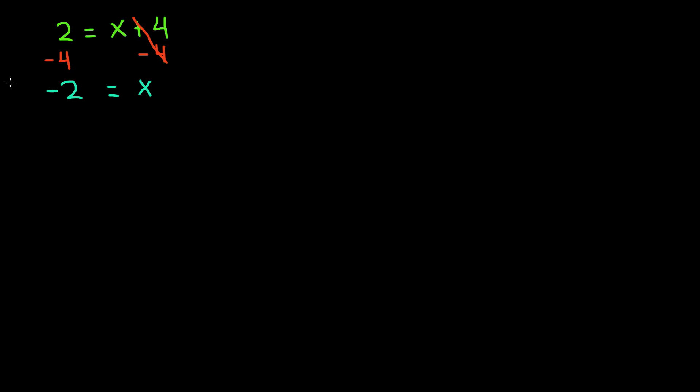Let's say this time we have 6x is equal to 36. This time we have multiplication. We know that the inverse of multiplication is division. So we have to divide both sides by 6.